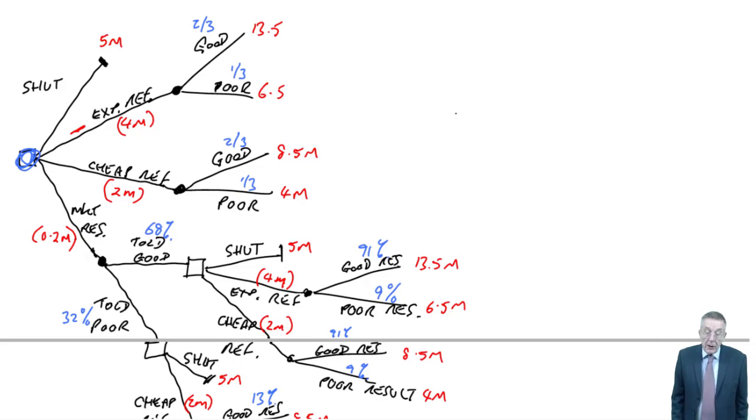Well, expensive research, of course, we've got the uncertainty. We pay our four, we might get back thirteen and a half, we might get back six and a half. And so, in the normal way, whenever there's uncertainty, we'll replace the uncertainty with the expected value. And I'll label the points. What colour shall I use? Green.